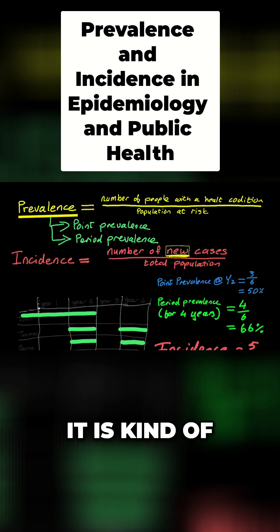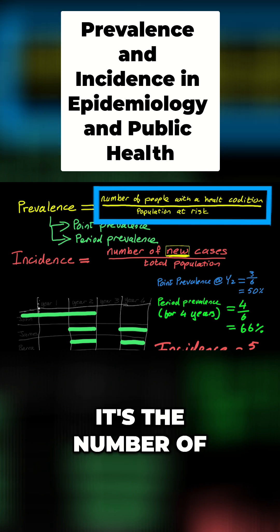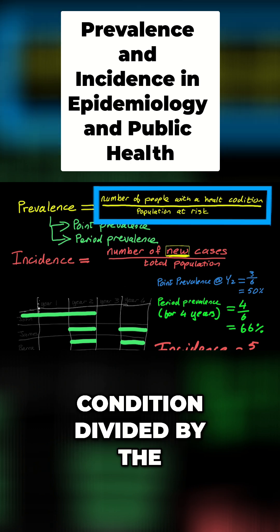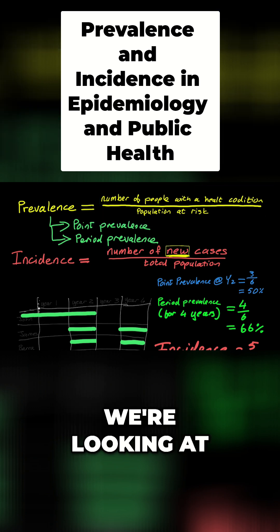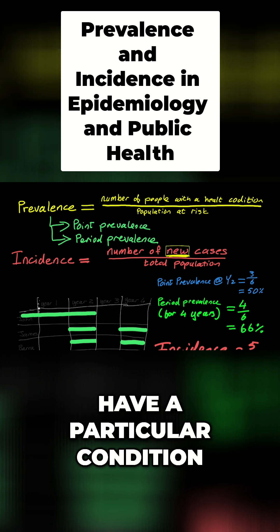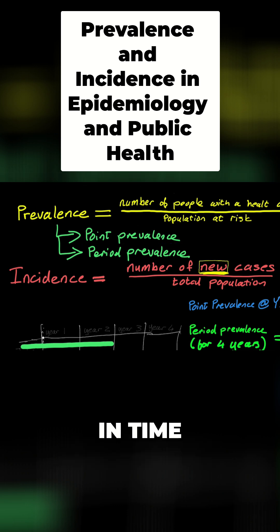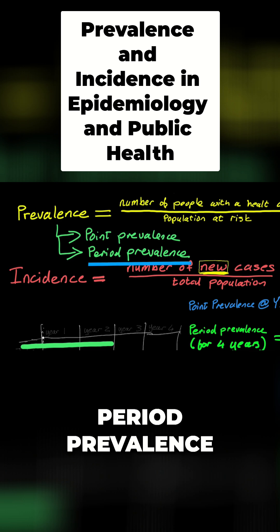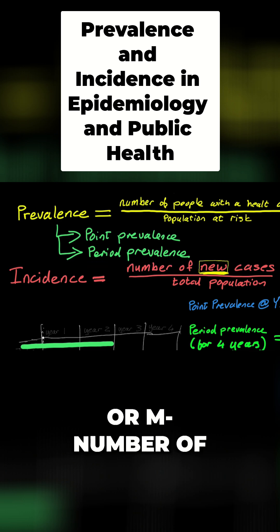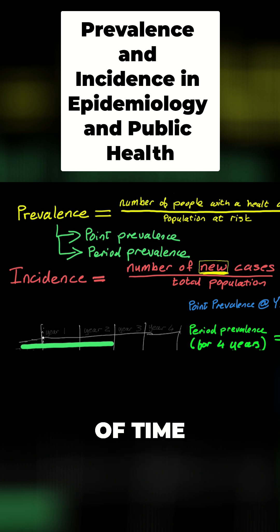What is prevalence? It is kind of what the word sounds like — it's the number of people that have a condition divided by the population at risk. In other words, of all the people we're looking at, how many of them have a particular condition? We're usually referring to point prevalence: at a point in time, how many people have condition X. We can also do a period prevalence — taking a number of years or months and asking how many people had the condition during that period of time.